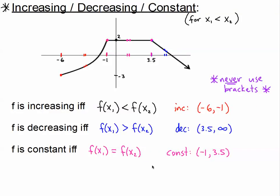I also wanted to point out one more thing about this picture: there are no local maxima in here, and there are no local minima. Some people think that this is a maximum, and that this is a maximum — but that's just not true. A local maximum will only occur when the graph changes from increasing to decreasing — there must be a top of a mountain. It cannot change from increasing to constant; this is not a local maximum.